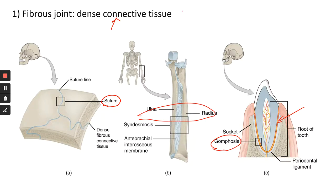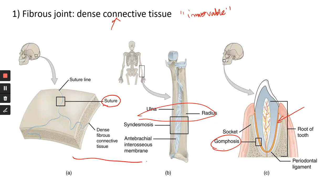Fibrous joints are immovable because you don't want any of these things — skull bones, tooth sockets — moving around or being loose.